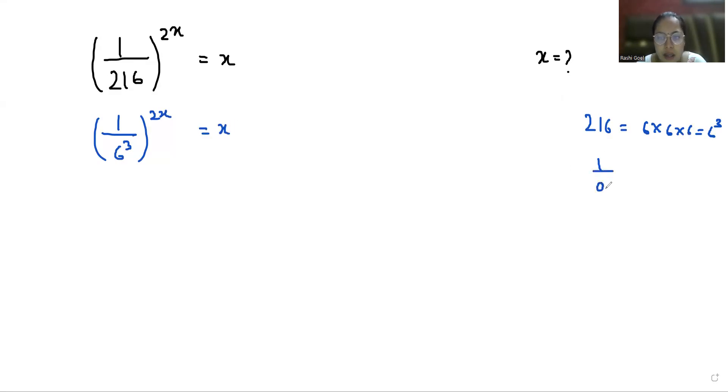Rule of exponent: (x^m)^n is equals to x^(mn). So here 6^(-6x) = x.